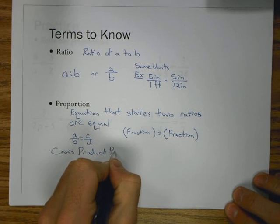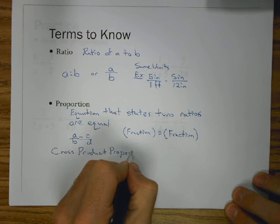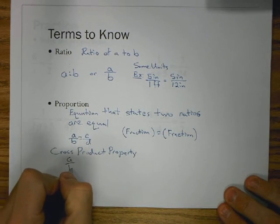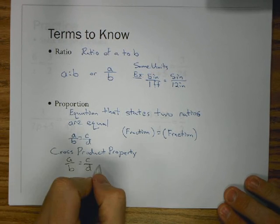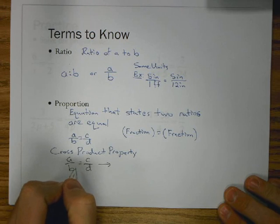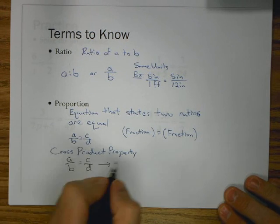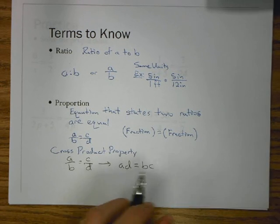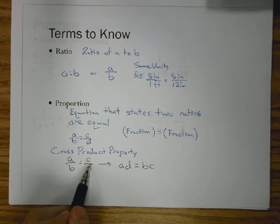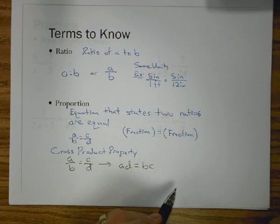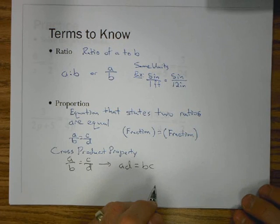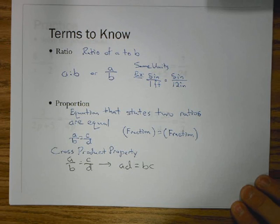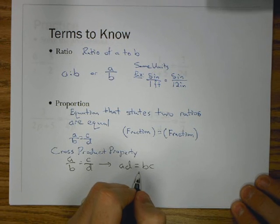If we solve with proportions, and we're going to see that quite a bit in this chapter, we're going to use the cross product property. And you may remember this from algebra. And this would be where I would have A over B equals C over D. And I can take that and multiply what the diagonals are. So, it would be AD equals BC.